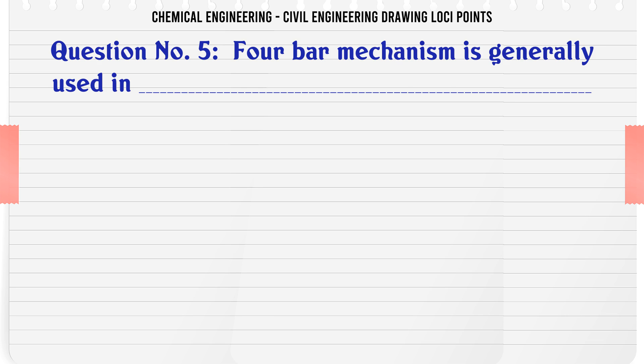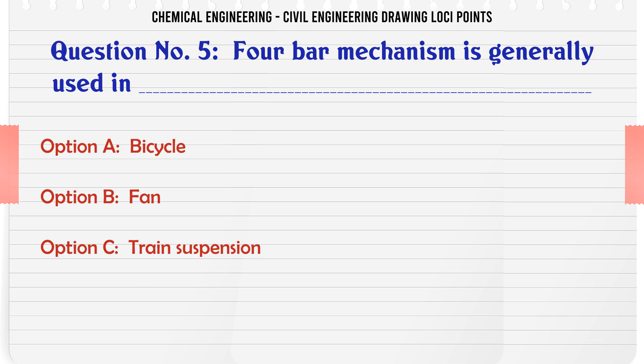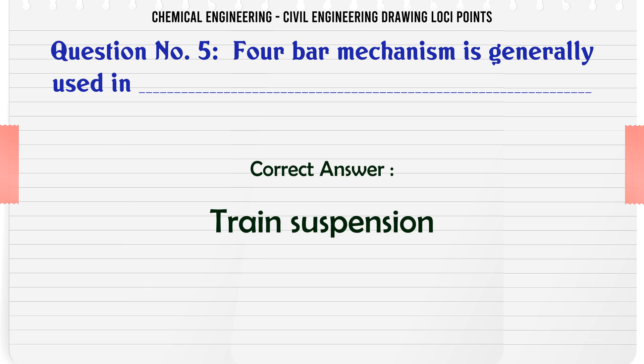A 4-bar mechanism is generally used in: a) bicycle, b) fan, c) train suspension, d) rickshaw. The correct answer is train suspension.